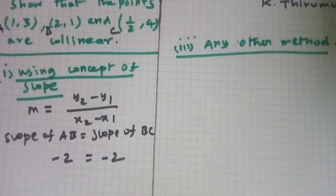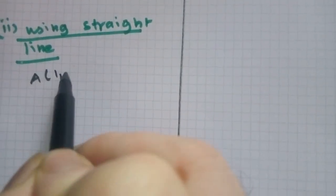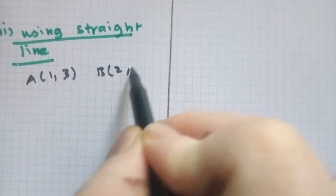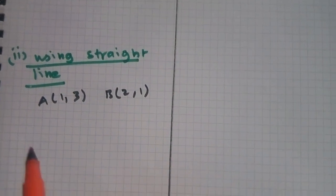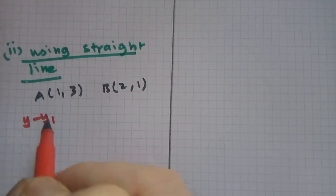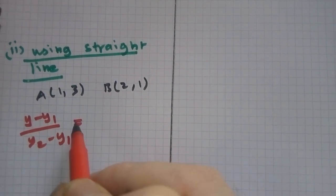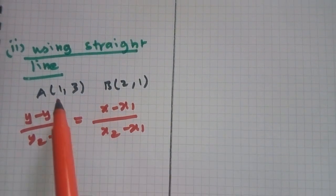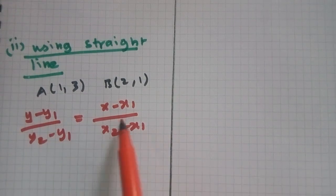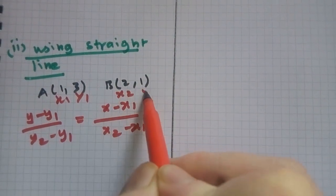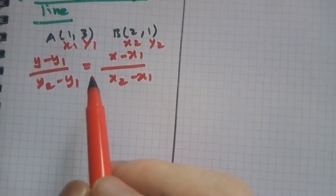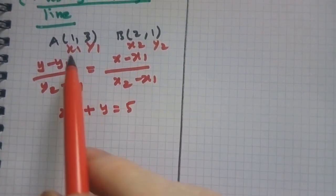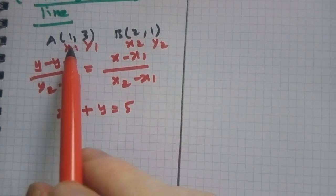First, given two points: A point (1,3) and B point (2,1). Applying the two-point formula: (y minus y1)/(y2 minus y1) = (x minus x1)/(x2 minus x1). Applying A point and B point as (x1, y1) and (x2, y2), we are getting the equation 2x plus y is equal to 5.